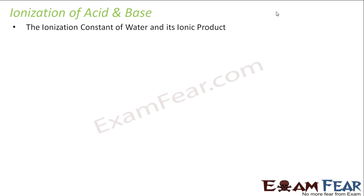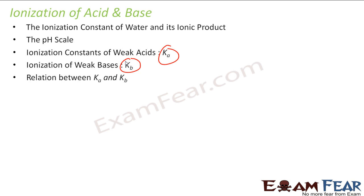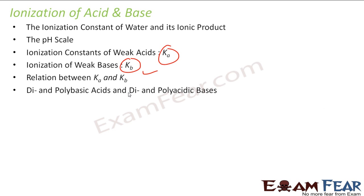In the ionization of acid and base, we will study the following things: the ionization constant of water and its ionic product, pH, the ionization constant of the weak acid (Ka), the ionization constant of the weak base (Kb), the relationship between Ka and Kb, and dibasic and polybasic acids which have more than one H+ ion to give — for example, H2SO4.